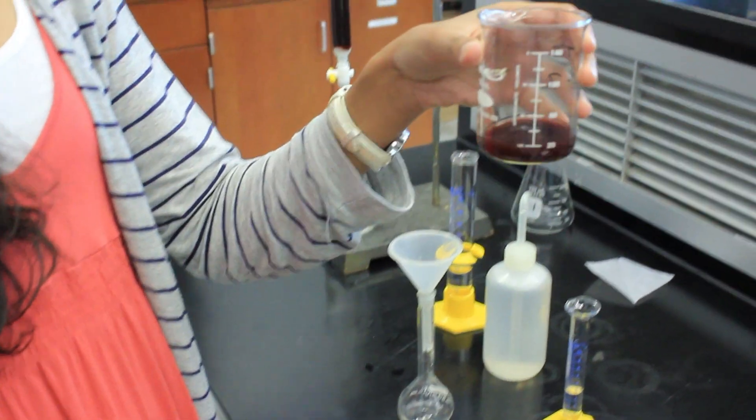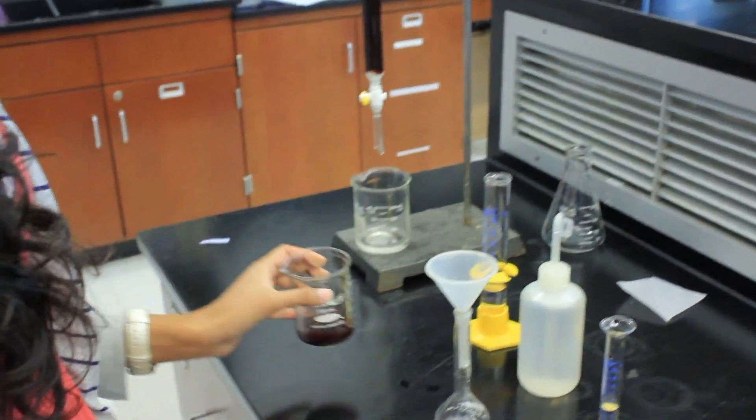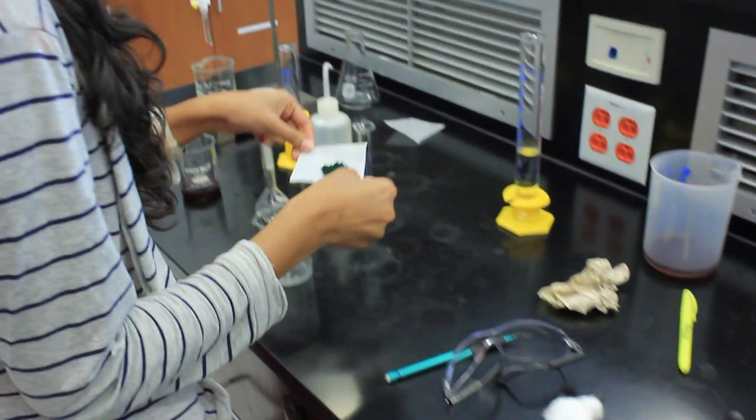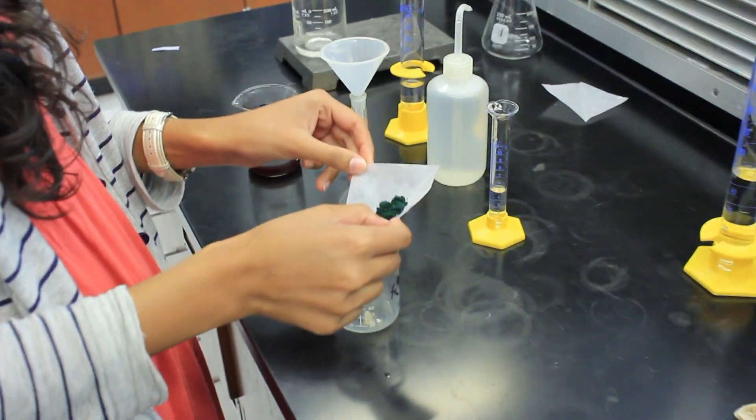Okay, so first we're going to reduce our green crystal solution. We're going to do this by adding between 0.7 to 0.8 grams of green crystals into a 150 milliliter beaker.